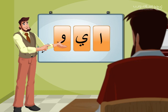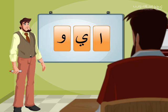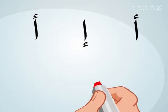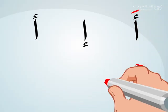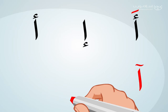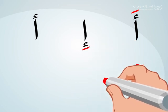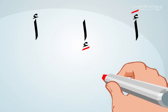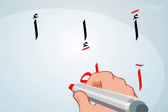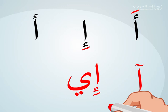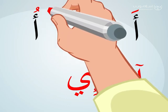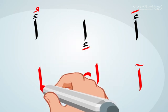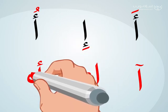Accordingly, let's start with the Alif. We write the Alif with Fatah and pronounce 'ah', then we add the Mad Alif and pronounce 'aah'. We write the Alif with Kasra and pronounce 'i', then we add the Mad Ya and pronounce 'ii'. We write the Alif with Dham and pronounce 'u', then we add Mad Waw and pronounce 'uu'.